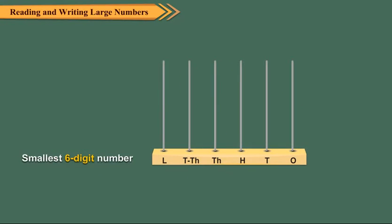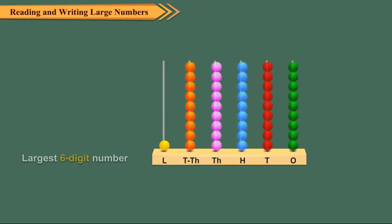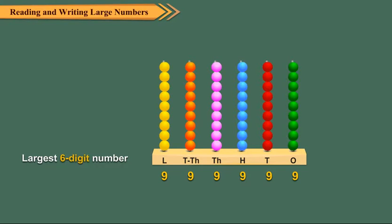Smallest six-digit number is 1,00,000. Largest six-digit number is 9,99,999.